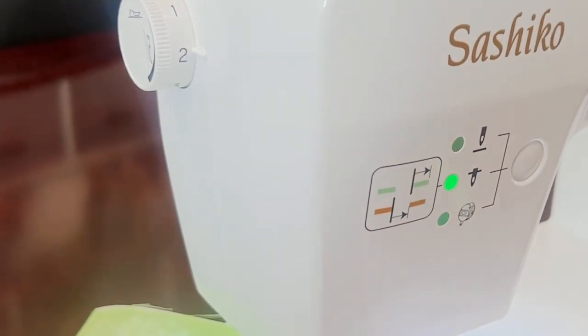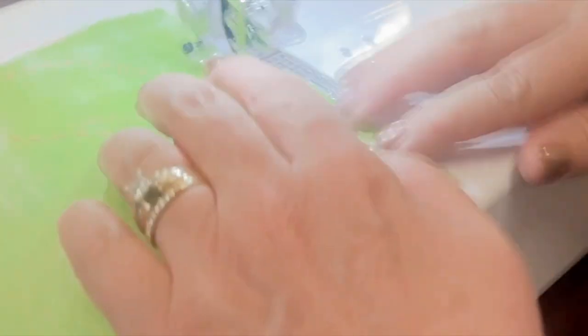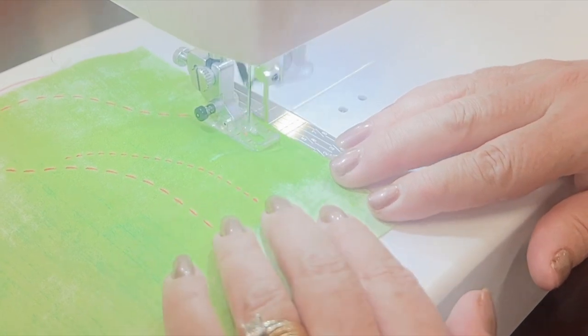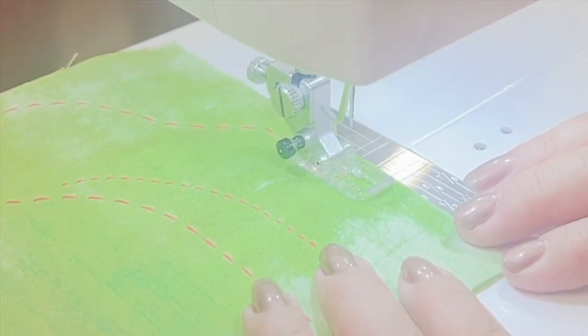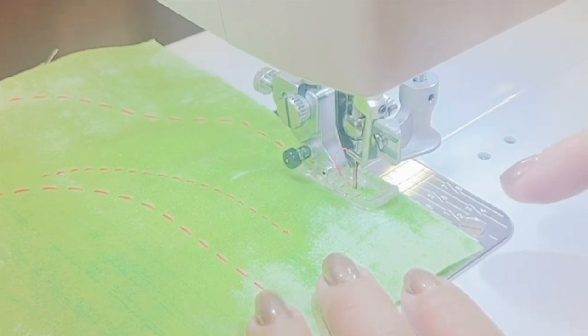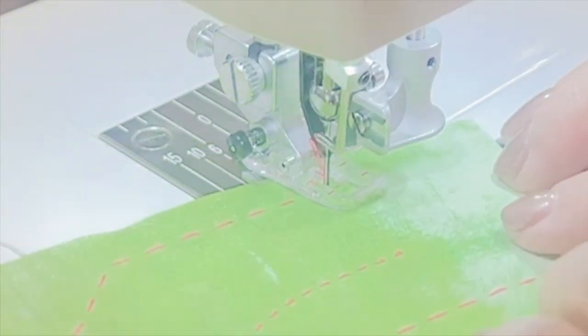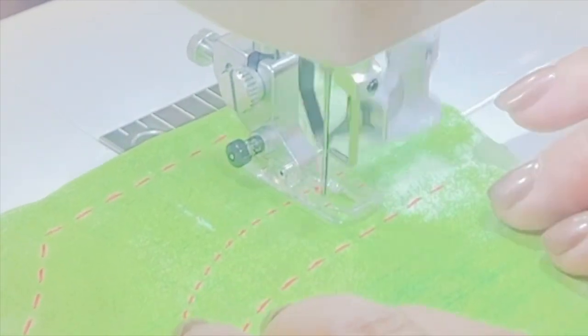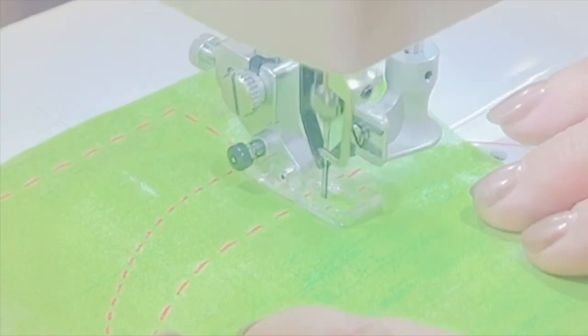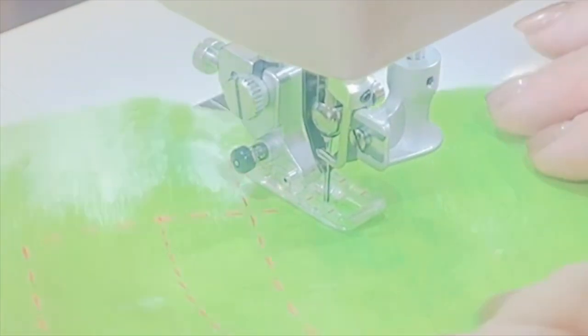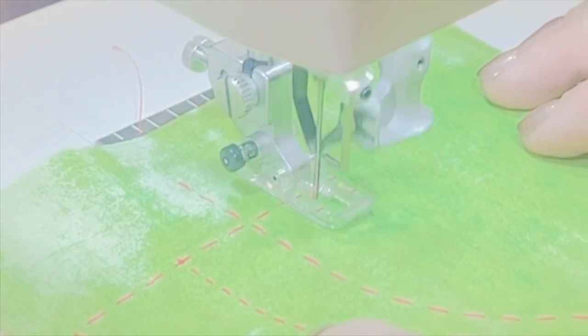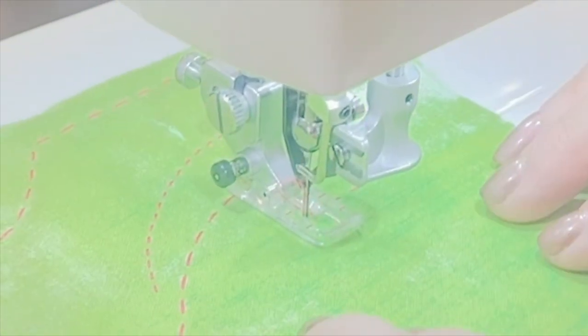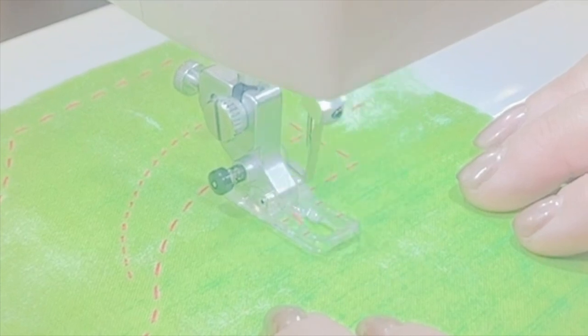All right, so let's go ahead and begin stitching. Again, I'm trying to be able to have nice corners. Notice the needle goes down and I can pivot. Needle stays down, pivot. Now isn't that wonderful that you can do that without having to stop and lift up the presser foot from behind?